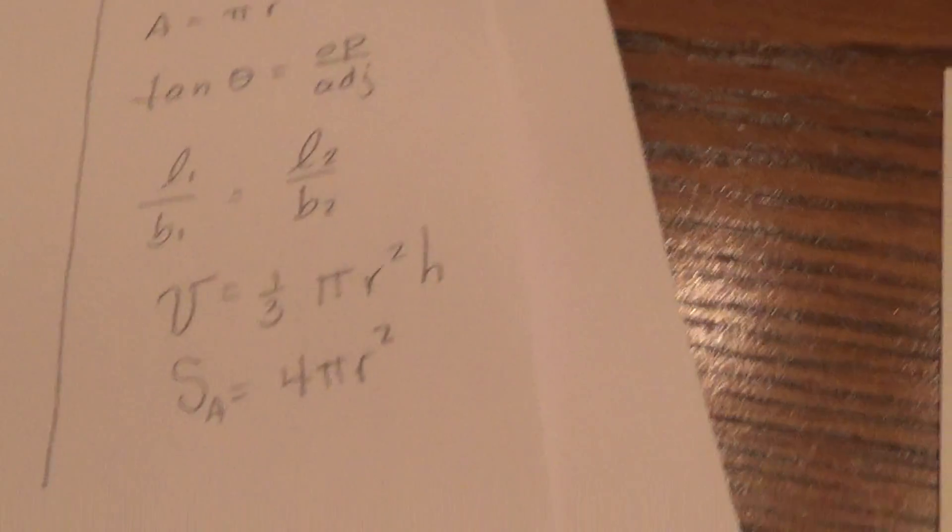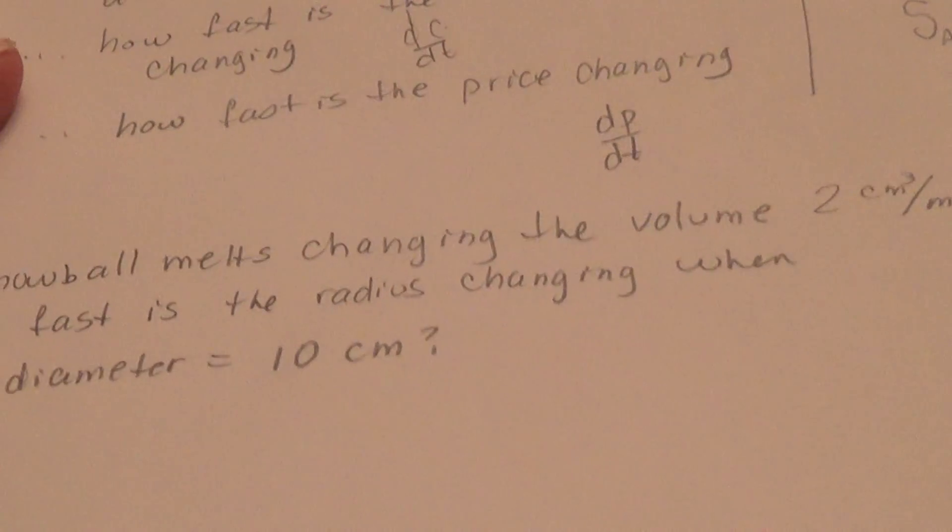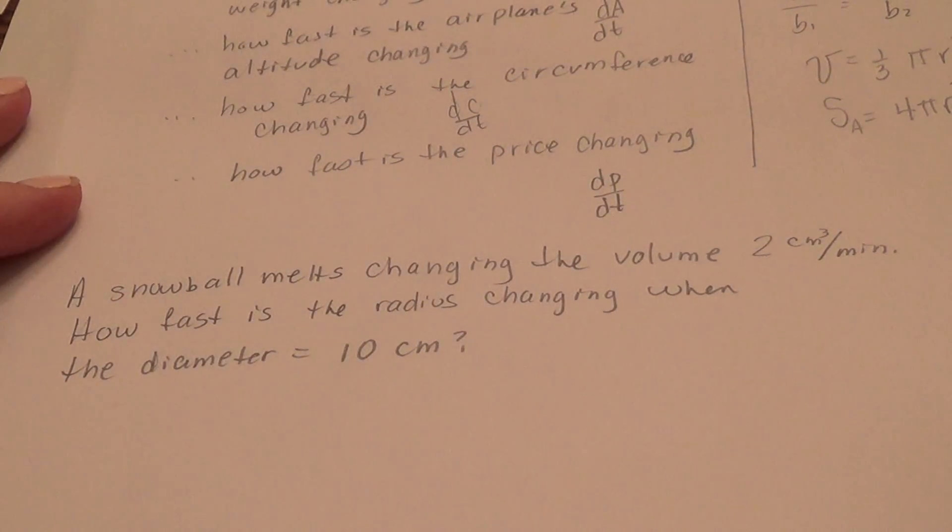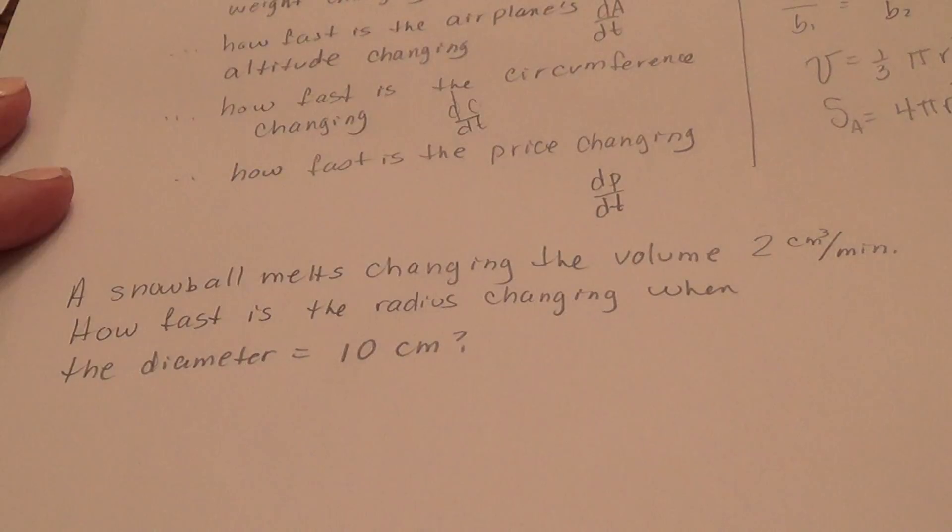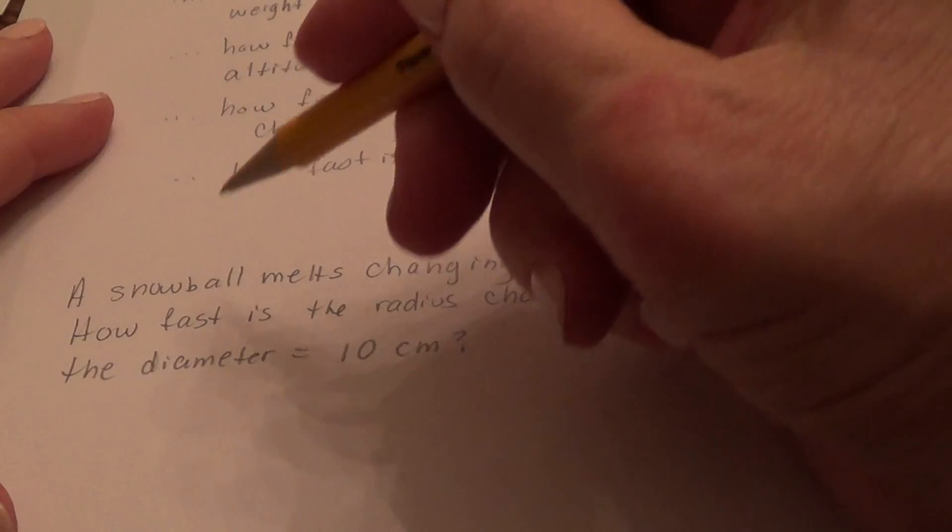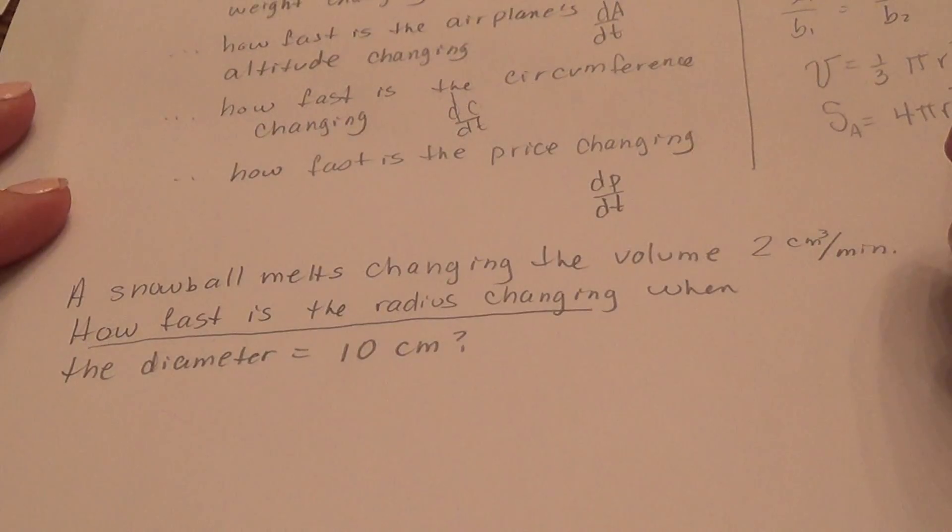So let's look at the actual problem here, and then I'll give you one to try. A snowball melts, changing the volume 2 cubic centimeters per minute. How fast is the radius changing when the diameter is 10 centimeters? So when we talk about a snowball, we're assuming that it's a spherical snowball. And the volume is decreasing because it's melting. And how fast is the radius changing? So we have to go for the question part.